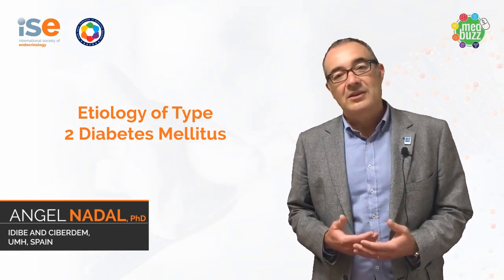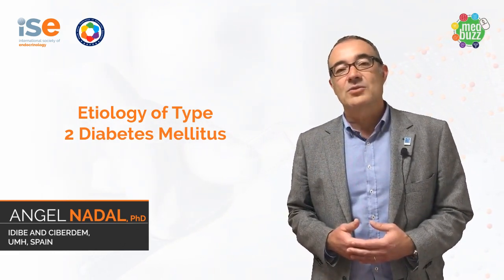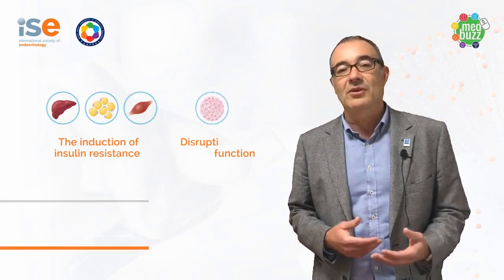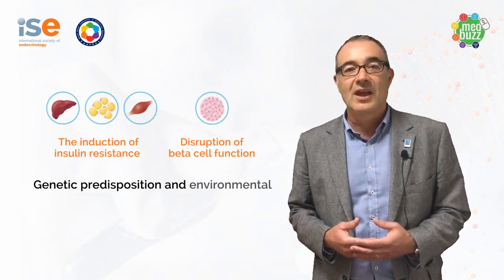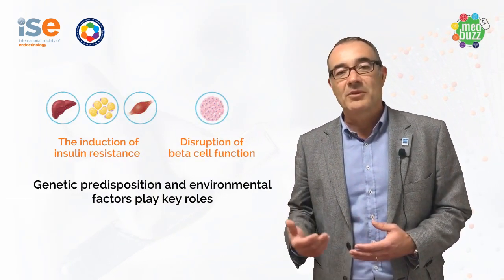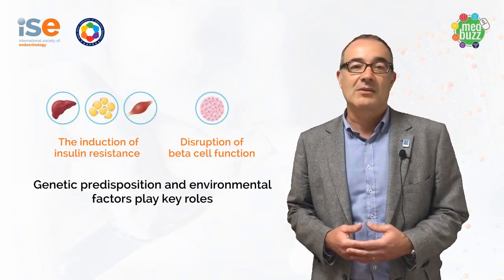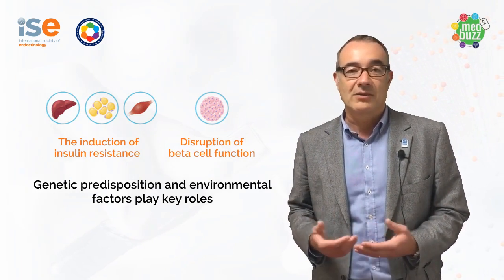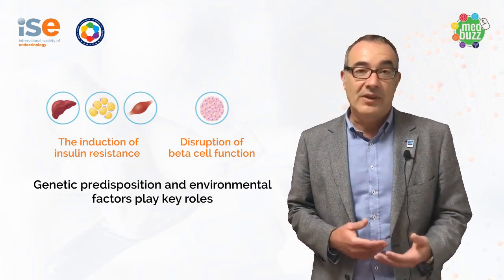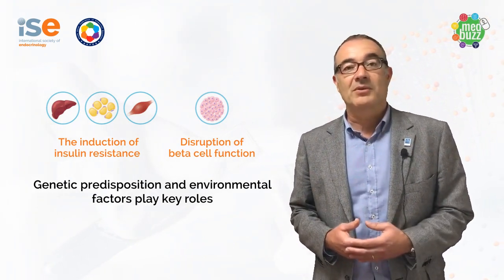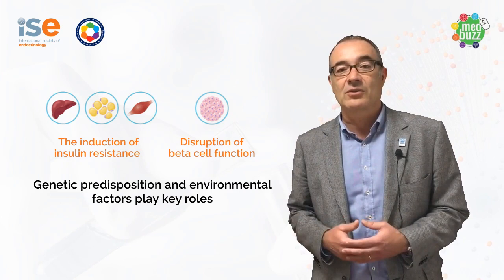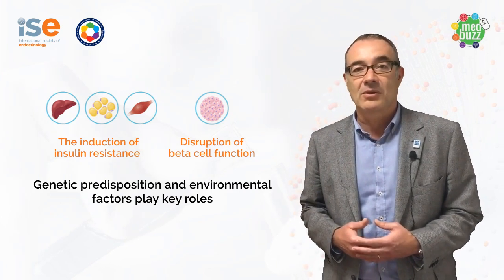The etiology of type 2 diabetes is based in the induction of insulin resistance and the disruption of pancreatic beta cell mass and function. Both genetic predisposition and environmental factors play key roles.